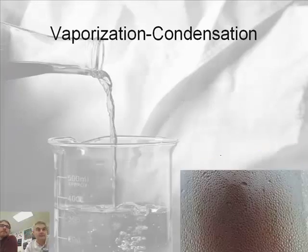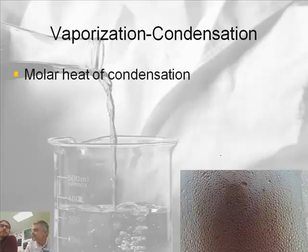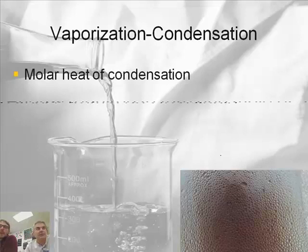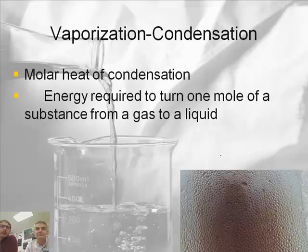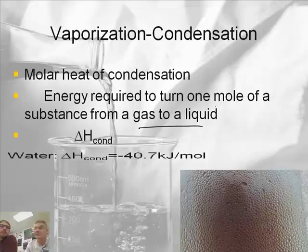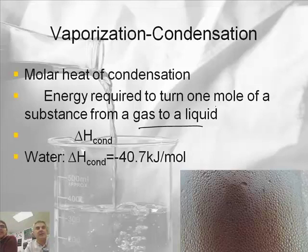And then we've also got the molar heat of condensation. That's just going the other direction—going from a vapor to a liquid. And this is called delta H cond. Guess what? The number is the same except different sign. Now, this is an exothermic process, meaning as something condenses, it releases quite a bit of energy, which is actually why steam burns are really, really bad.